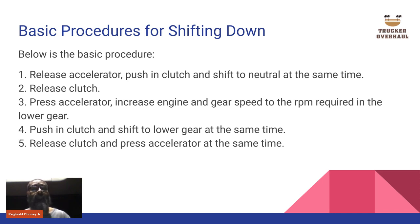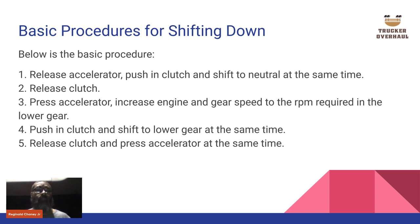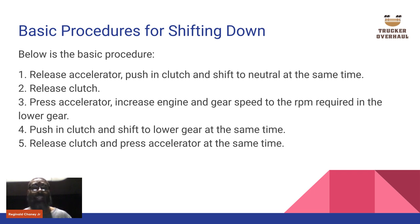Basic procedures for downshifting: Release the accelerator, push in the clutch, and shift to neutral at the same time. Release the clutch. Press the accelerator to increase engine and gear speed to the RPMs required for the lower gear. Push in the clutch and shift to the lower gear at the same time. Release the clutch and push the accelerator at the same time. It comes with practice — once your body gets into that motion, you'll feel the gears and know how to clutch and shift at the same time.